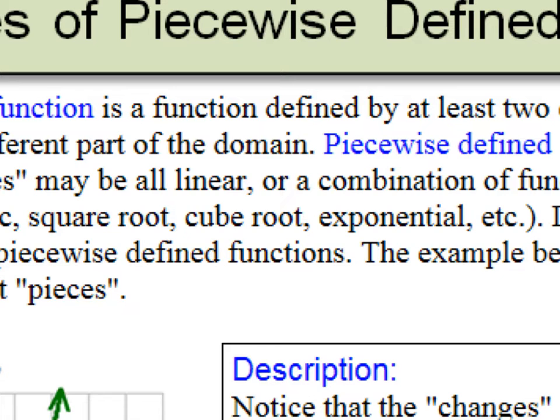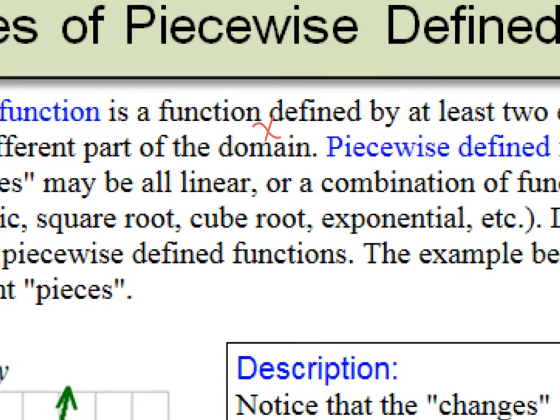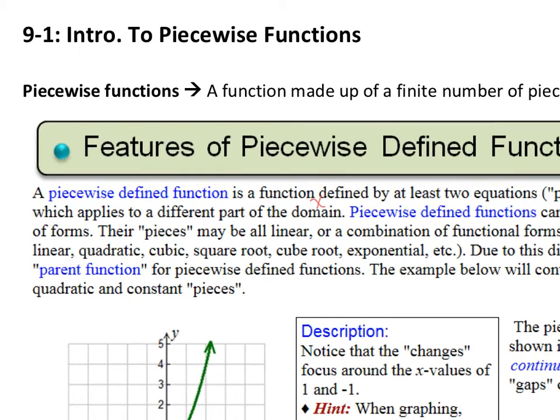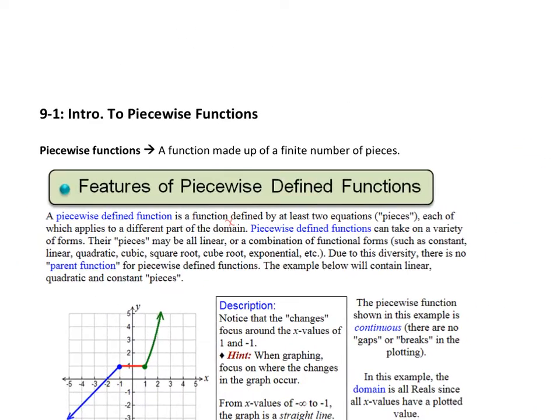So our domain can be different. So our domain is our x values and our domain is not the same for each part or each piece. Piecewise defined functions can take on a variety of forms. Their pieces may all be linear, a combination of forms such as constant, linear, quadratic, cubic, square root, cube root, exponential, etc. The list can go on and on and on.